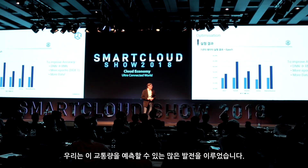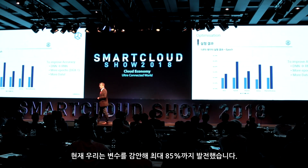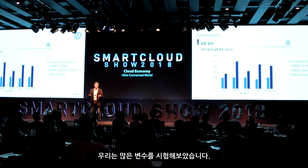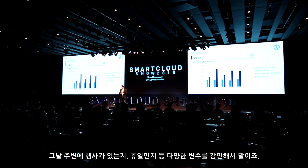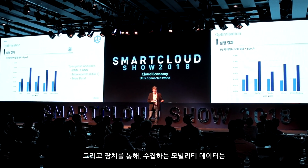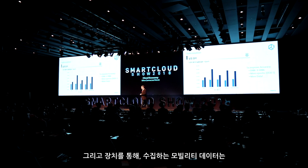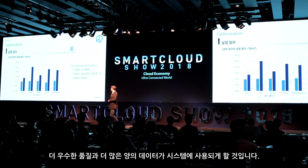We've made quite a lot of advances in being able to predict traffic. At the moment we're up to about 85% accuracy on different variables. We've tried loads of different variables including stock prices and whether there are various events or holidays happening on the day. Through our devices collecting mobility data, we'll have even better quality and quantity of data to drive through these systems.